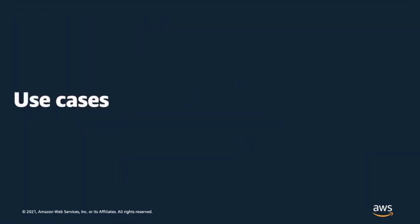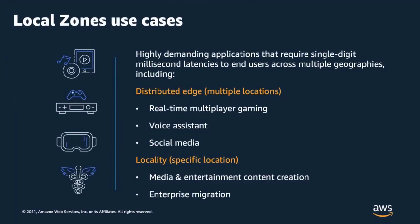Now let's discuss how our customers are using these Local Zones. Local Zones can be used for highly demanding use cases that require single-digit millisecond latencies to end users or to on-premises. Broadly, these use cases can be grouped into two categories. The first is Distributed Edge, which includes customers like Supercell and Ubitus in the gaming vertical and social media companies who want to place select parts of their applications in multiple locations worldwide. The second category includes locality-based use cases where customers like MindBody and Netflix need access to cloud services in specific locations close to their existing offices and data centers.